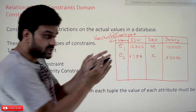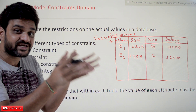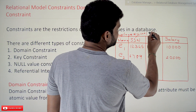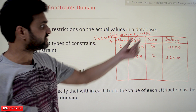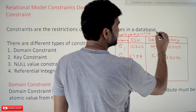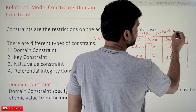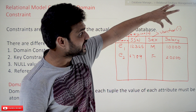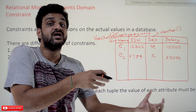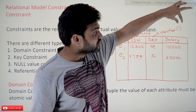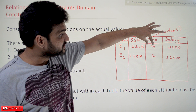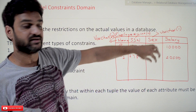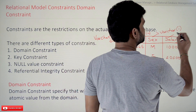The employee name should not exceed 30 characters. Similarly, SSN is declared as INT with a size of 10 digits. For sex, we have taken VARCHAR(1), meaning it is a character string of maximum size 1 — that's why we use 'M' and 'F' for male and female. Salary is declared as FLOAT.